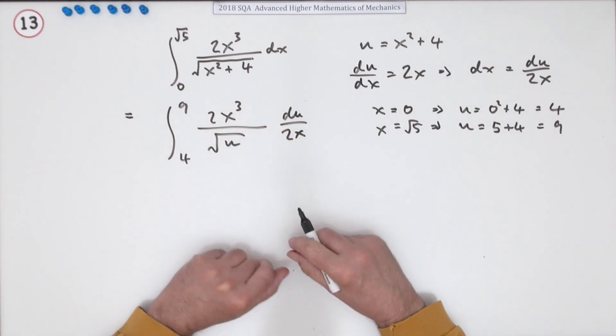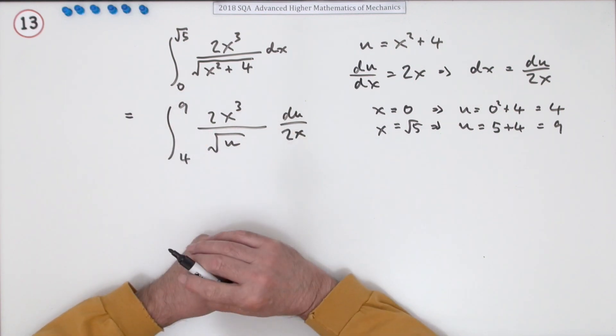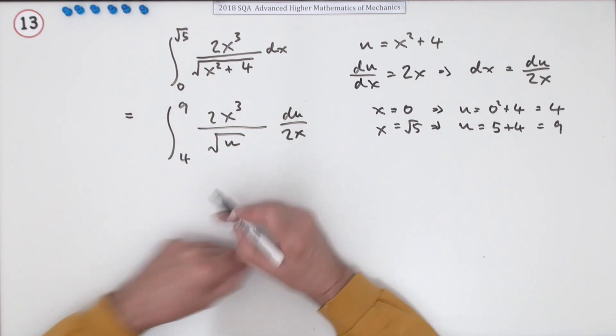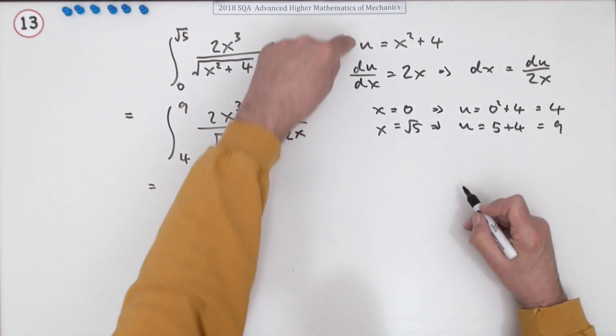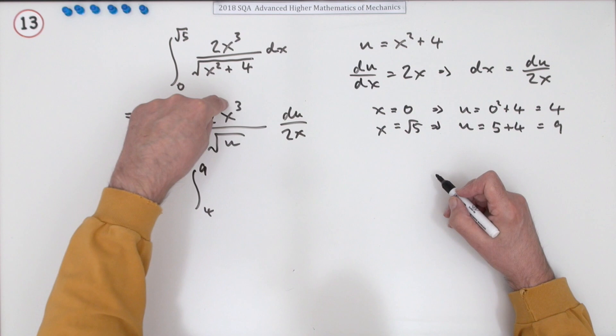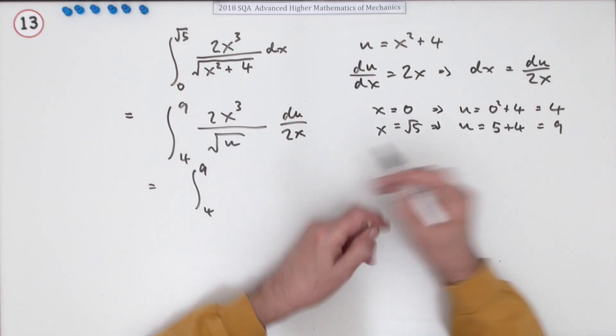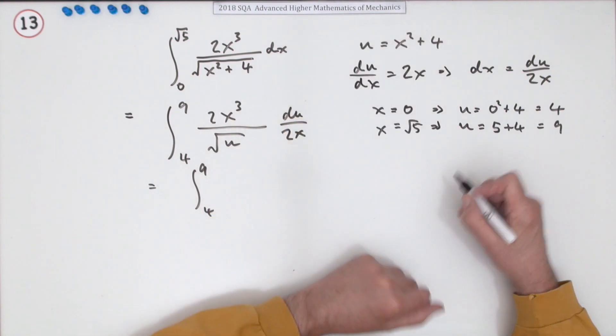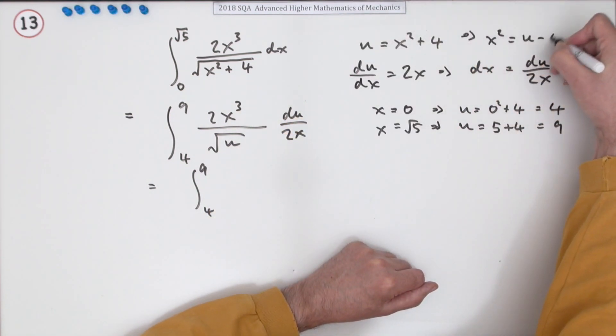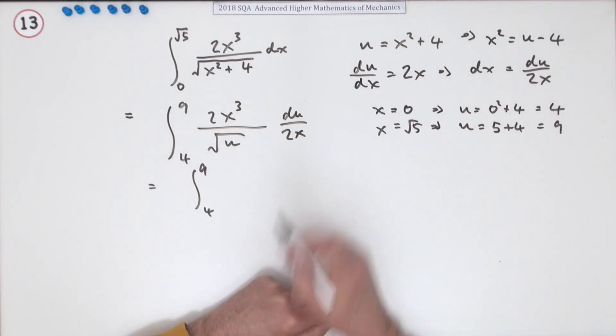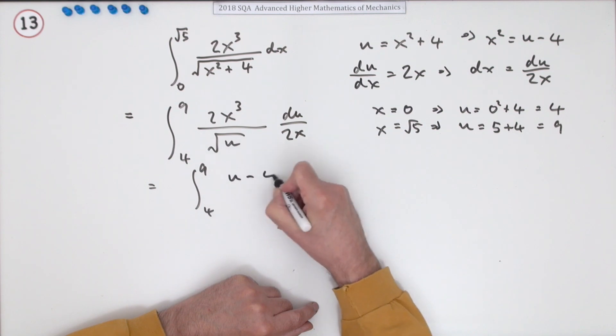That 2x will cancel out most of that, leaving x² on top. But x² hasn't gone, so I need to go back to the substitution to remove it. If u = x² + 4, that means x² = u - 4.